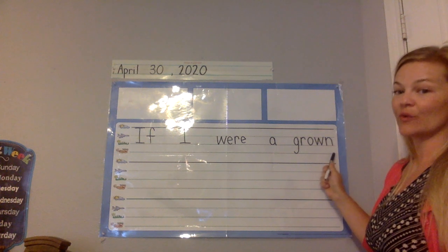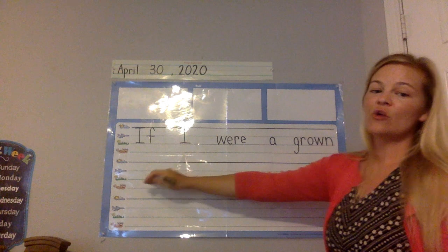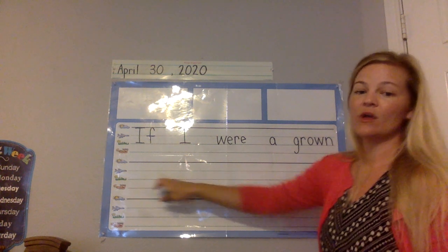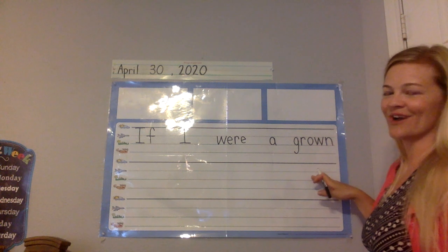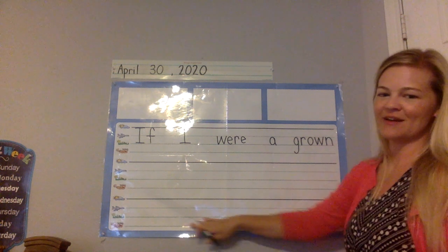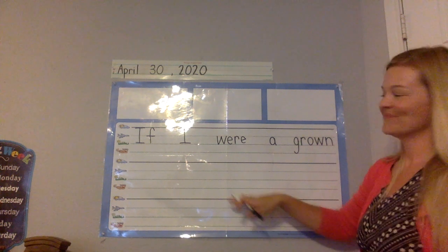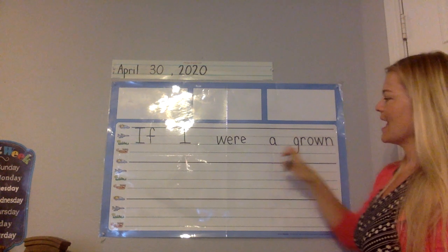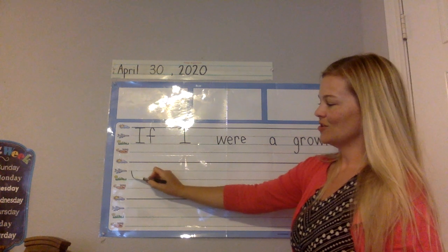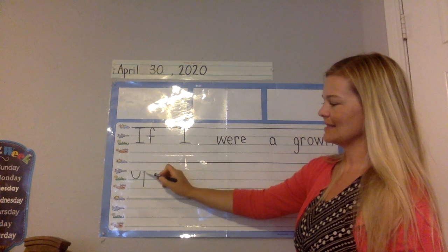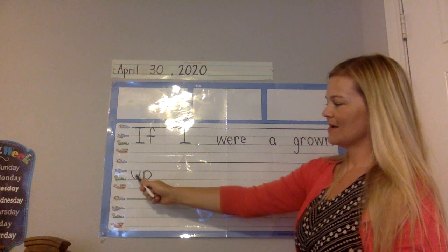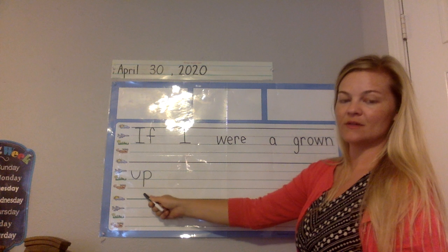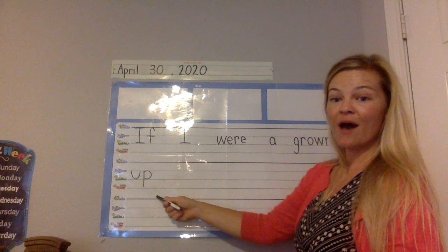We definitely ran out of room — we need to start on the next row. When you start a new row, always start writing at the beginning of the row, not the middle or the end, and don't skip a row. Come down to the next row at the beginning and write U and P. U makes an "uh" sound, P makes a "pop" sound, so it's "up."